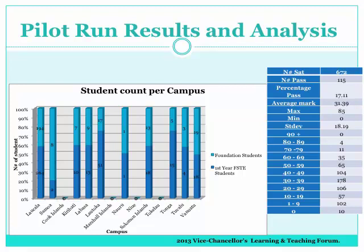The test was first offered at all campuses, showing the student count per campus in a graph. We had two strengths of questions — easy and hard — and also offered it as a pilot to foundation students to see how they responded. The table shows the mark range, number of students who sat the test, percentage pass, and average marks. The major finding was a percentage pass of only 17.11%, indicating that students really need this test — or possibly that it is too hard.